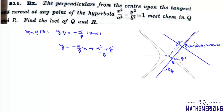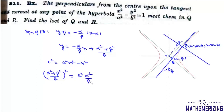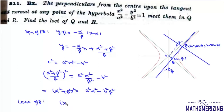This line is actually tangent to the hyperbola. The condition of tangency is c² = a²m² − b². Here c = (α² + β²)/β, so (α² + β²)²/β² = a²·(α²/β²) − b². Simplifying, (α² + β²)² = a²α² − b²β². So the locus of Q is (x² + y²)² = a²x² − b²y².